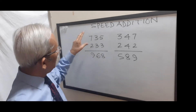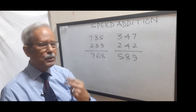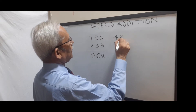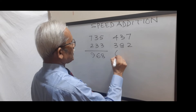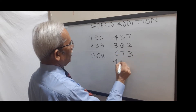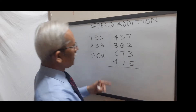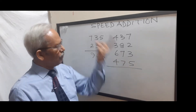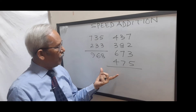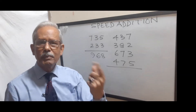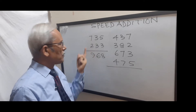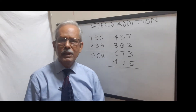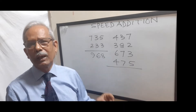Here we have used a method, but the problem is that if I increase the numbers — say 437, 382, 673, 475 — using this method will take much more time and may not be very suitable, unless you have got a lot of practice. So what I suggest is we use speed addition — we will not take help of those tricks. We will simply take the help of my processor and increase its speed so that my calculation even by the conventional method becomes much faster.